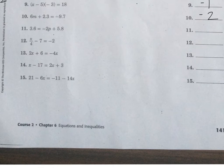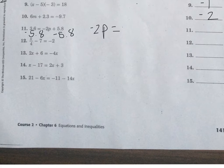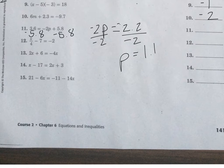For number 11, you subtract 5.8 from both sides. You have that negative 2p equals negative 2.2. To get p by itself, divide both sides by negative 2, and p equals a positive 1.1. The answer to number 11 is 1.1.